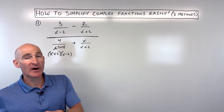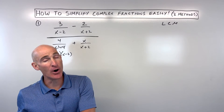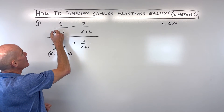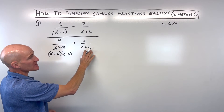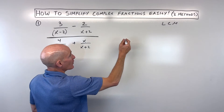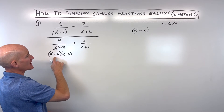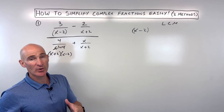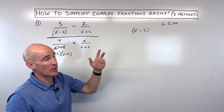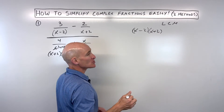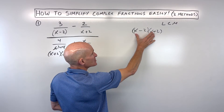First, I want to factor the denominators as much as I can. I notice that x squared minus four can be factored as a difference of two squares. What's a little counterintuitive about the least common multiple is that you actually take whatever occurs the most, not the least. For example, we have one x minus two, no x minus twos, one x minus two — we take what occurs the most, which is at most one x minus two. Similarly, x plus two occurs at most once in each fraction. So our least common multiple is going to be x minus two times x plus two.